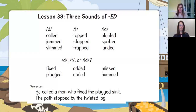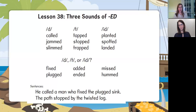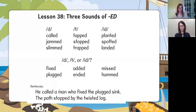Let's read our sentences. When I point, you read. He called a man who fixed the plugged sink. Let's read it a little faster: he called a man who fixed the plugged sink. What is a plugged sink? It probably means it has a lot of stuff trapped in it — it's stopped up. Who would you call? A plumber — when your sink is clogged up, you call a plumber. Now the last sentence: the path stopped by the twisted log. What stopped by the twisted log? The path — by the twisted log. Let's read it one more time: the path stopped by the twisted log.